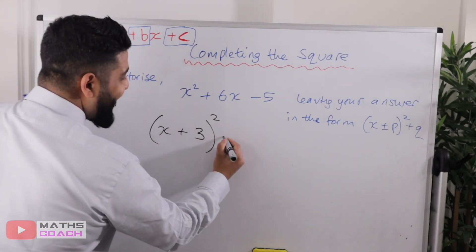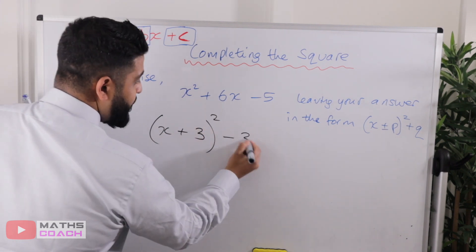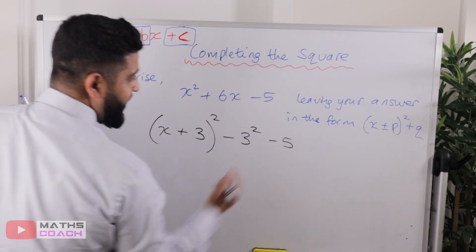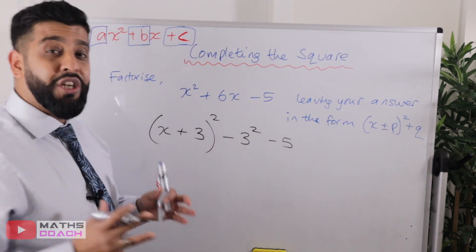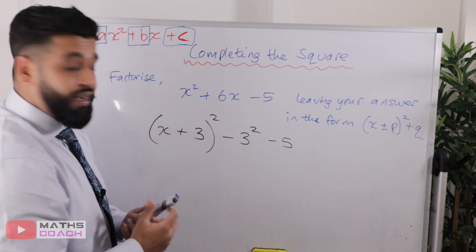Step number three, take away the squared of that value. So three squared. Now that five is already there. So I just append that to the end of that, that continues. And that's essentially it. All that's required now is to tidy up. This is completing the square. It's as simple as that.